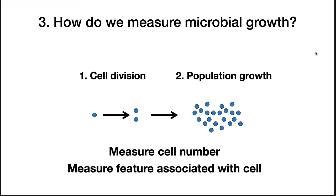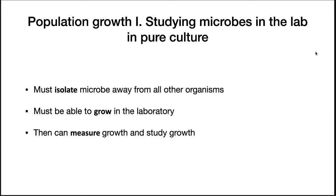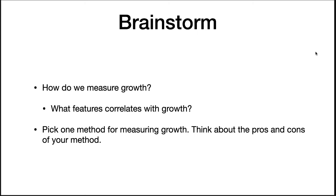When we describe microbial growth, we are again talking about an increase in population. The growth in number can be measured by counting the cells, or by measuring a feature that is associated with cell number increase. The rate of microbial growth is another trait that is unique to each individual species. To determine the growth properties of microorganisms, it is most often necessary to isolate the microbe in pure culture — a culture that contains only one type of microorganism. Think about as many examples as you can of how you can measure growth, then pick one method and think about the pros and cons of your method.